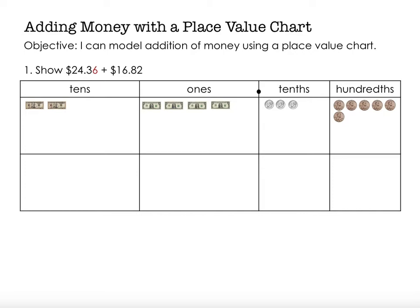Next, I'm going to show $16.82. That's made up of one ten, six ones — one, two, three, four, five, six — eight tenths or eight dimes — one, two, three, four, five, six, seven, eight — and two hundredths or two pennies — one, two.